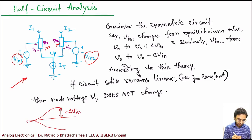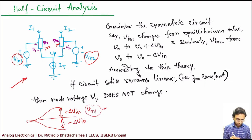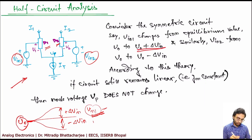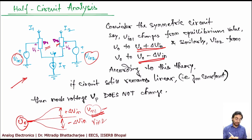They change by delta_Vin positive and negative — plus delta_Vin and minus delta_Vin. So your Vin1 changes from V0 to V0 plus delta_Vin, and Vin2 changes its value from V0 to V0 minus delta_Vin. Now according to this theory, if the circuit in this condition remains linear, then the potential at VP is always constant.